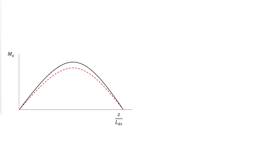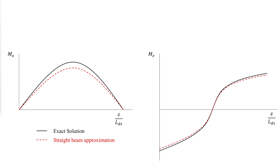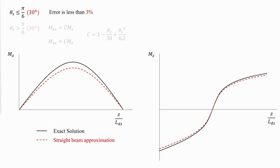In the following figure, the bending moment diagram for a horizontally curved simply supported uniformly loaded beam is shown. The solid black line shows the moment for the exact solution, and the dashed red line shows the moment calculated using the straight beam approximation. The torsional diagram for this beam is also shown. The required shear calculated using the straight beam model is equal to the theoretical value; however, the flexural and torsional moments are under-predicted when theta_s is less than or equal to pi over 6.